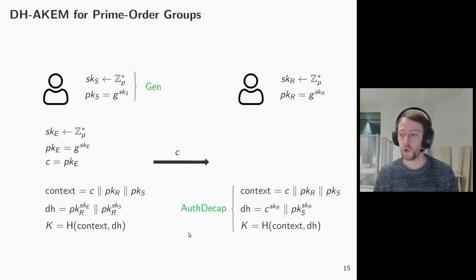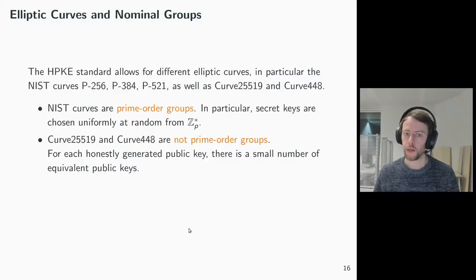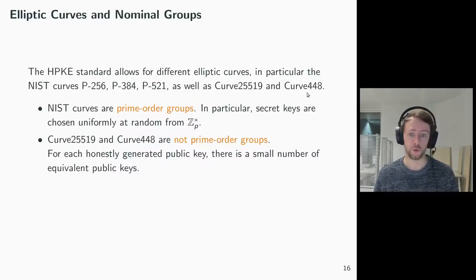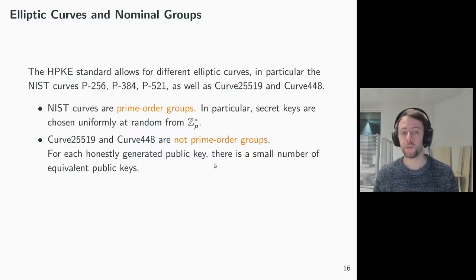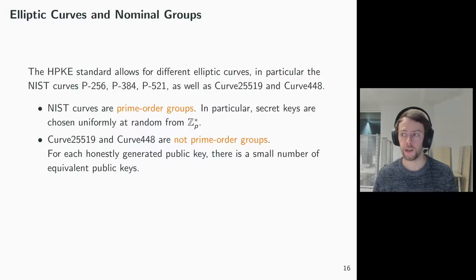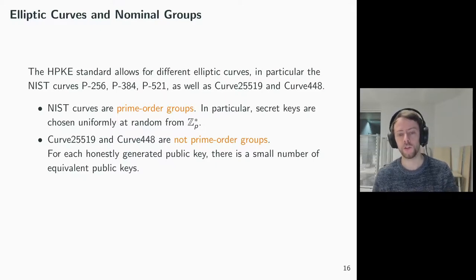A variable DH is set to the concatenation of the static-ephemeral and the static-static Diffie-Hellman operation results. Finally, the KEM shared secret is computed by applying a key derivation function to the context and the Diffie-Hellman values. The decapsulation function uses the equivalent Diffie-Hellman operations to derive the same shared secret. While the first elliptic curves are prime order groups, curve 25519 and curve 448 are actually not prime order groups. In particular, for each honestly generated public key they have a small number of equivalent public keys that will lead to the same Diffie-Hellman shared secret. So if you want to avoid identity misbinding or unknown key share attacks with these curves, it is vital to put the public keys explicitly in the context of the key derivation, just as we saw for DH-ACAM.